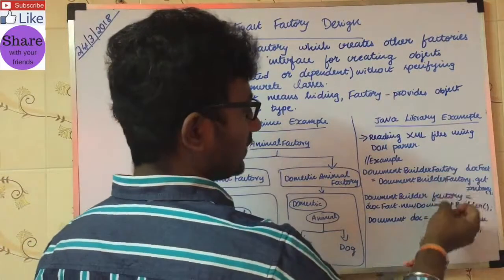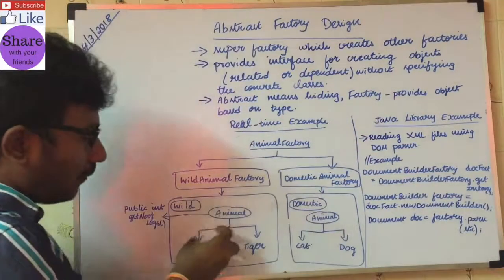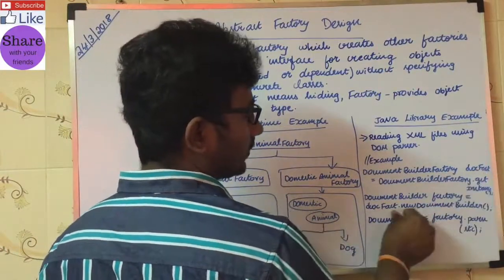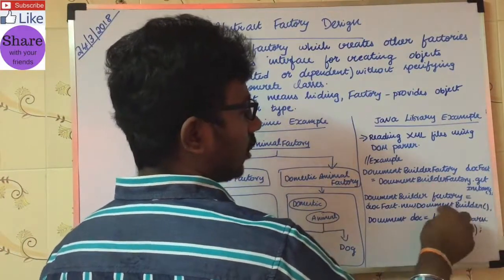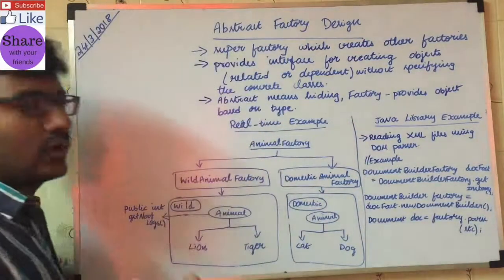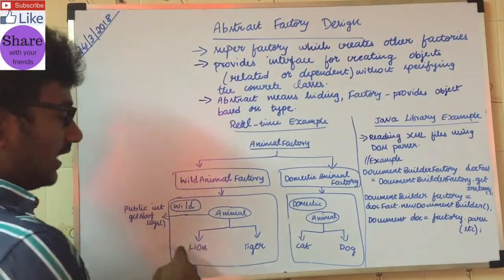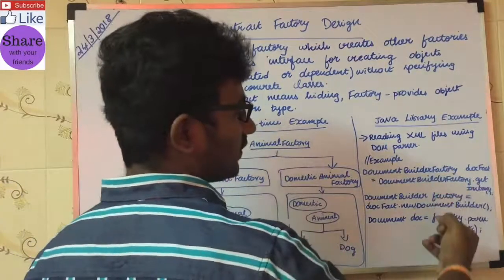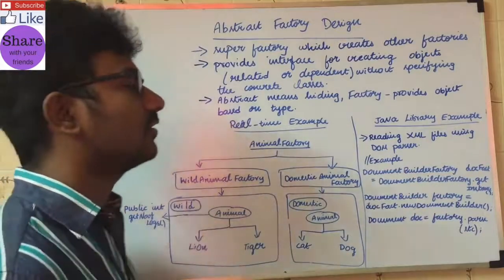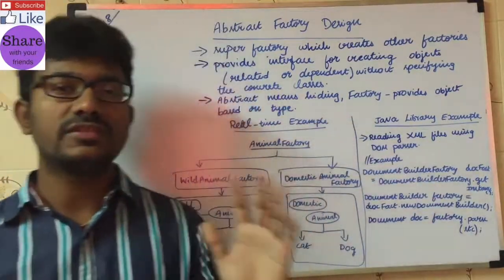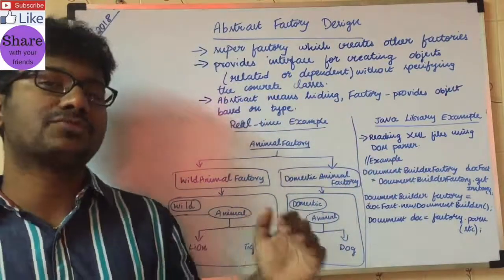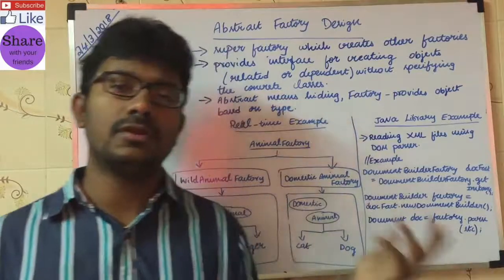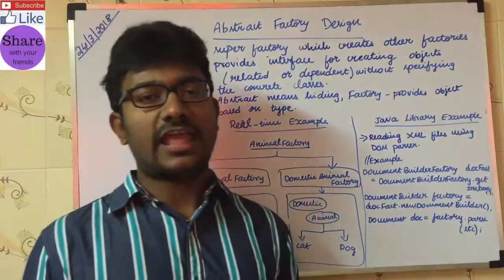When you look at the DocumentBuilderFactory object, internally there is an object being selected and returned. This is how the abstract factory works in Java's standard library. We will explain everything about the abstract factory with code snippets in the next video. Thanks for watching this video.